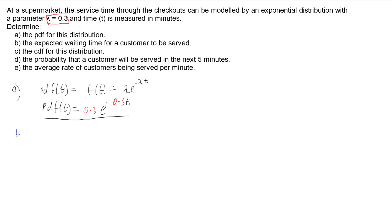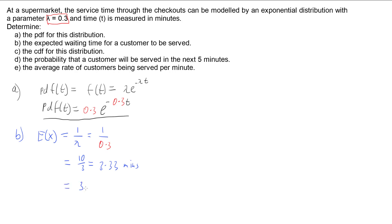Part B: the expected waiting time of an exponential distribution is given by 1 on lambda. So we're going to have 1 on 0.3. Our expected waiting time, or expected value, is 1/0.3, which is 10 thirds, or in decimals 3.33 minutes, which we can work out is 3 minutes and 20 seconds. So your expected value is just over 3 minutes.